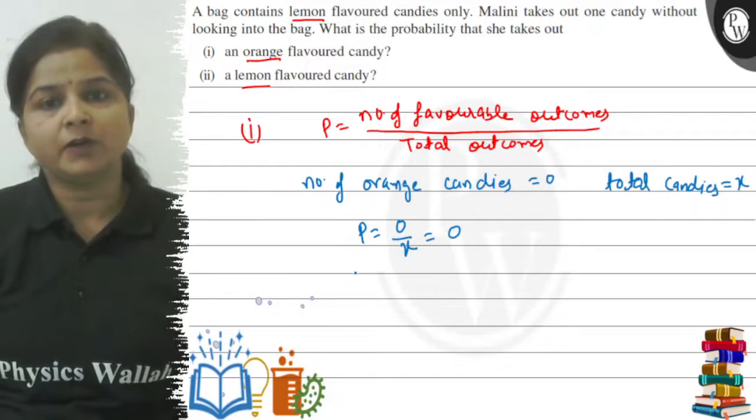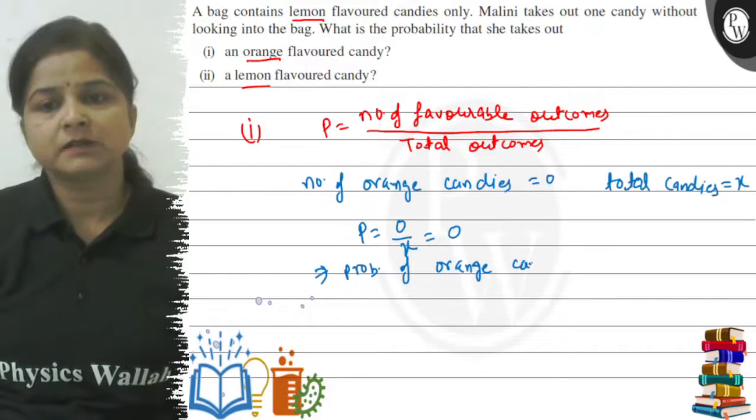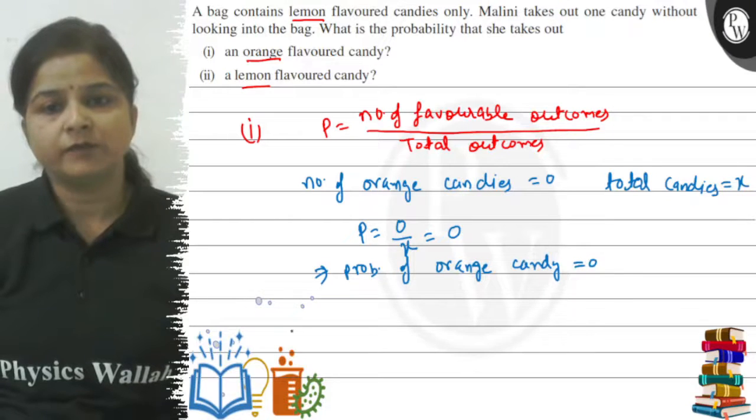So the probability of orange flavor candy, probability of orange candy, is 0.